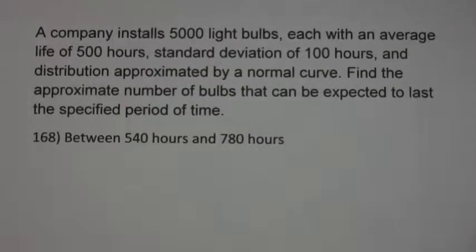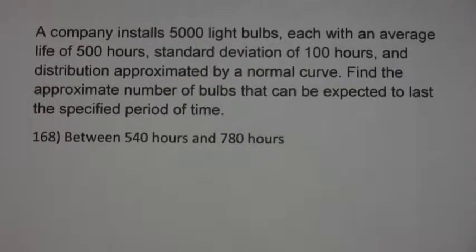A company installs 5,000 light bulbs with an average life of 500 hours, standard deviation of 100 hours, and distribution approximated by a normal curve. Find the approximate number of bulbs that can be expected to last a specified time.